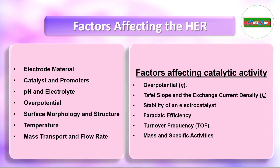The hydrogen evolution reaction (HER) is influenced by various factors that can impact its efficiency and kinetics. The choice of electrode material significantly affects the process; hardened metals and metal alloys such as platinum, nickel, and other transition metals exhibit good catalytic activity. The catalyst design must obey the Sabatier principle, which states that the binding energy between the catalyst and the reactant should be neither too strong nor too weak. The pH of the electrolyte solution can also influence the HER — in acidic conditions, reaction rates tend to be higher compared to alkaline conditions.